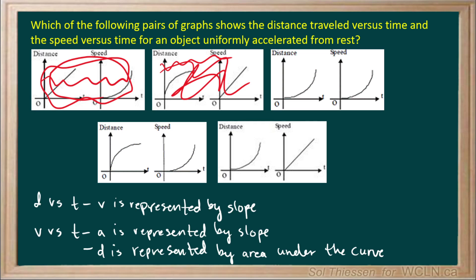Next we have a distance versus time graph which shows a zero initial speed that is increasing with time. And then on our speed versus time graph, we see something of a similar fashion, but note that the slope of the speed versus time graph is variable, indicating a changing acceleration. So this is not indicative of an object that is uniformly accelerated.